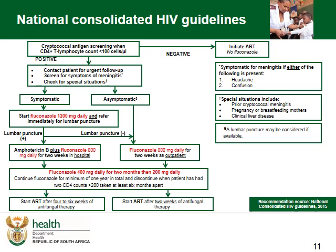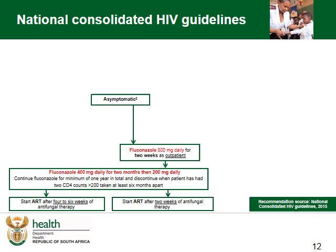This is the current complete algorithm for the prevention, diagnosis and management of both asymptomatic cryptococcal antigenemia as well as cryptococcal meningitis, and can be found in the National Consolidated HIV Guideline of 2015. We will be exploring cryptococcal meningitis in future modules, but I would like to emphasize the management of the asymptomatic patient. It's important to note that it's still good practice to offer the patient a lumbar puncture if possible, as many as 20% of patients may even have subclinical cryptococcal meningitis. But this is not feasible in many of our rural facilities.